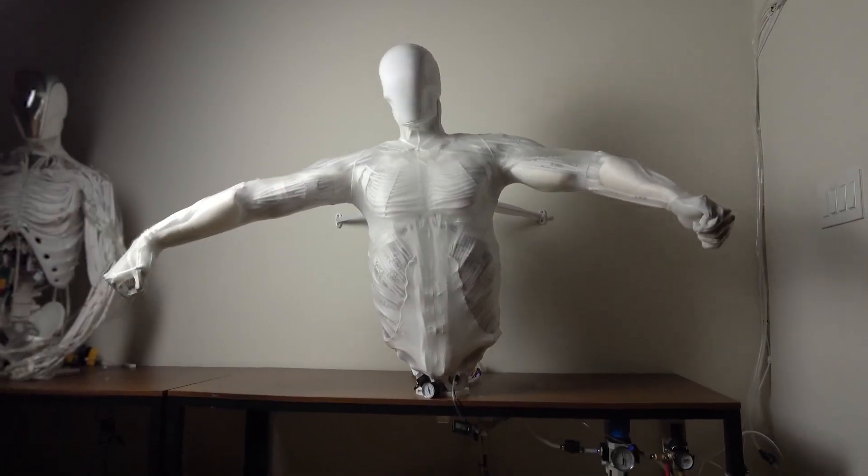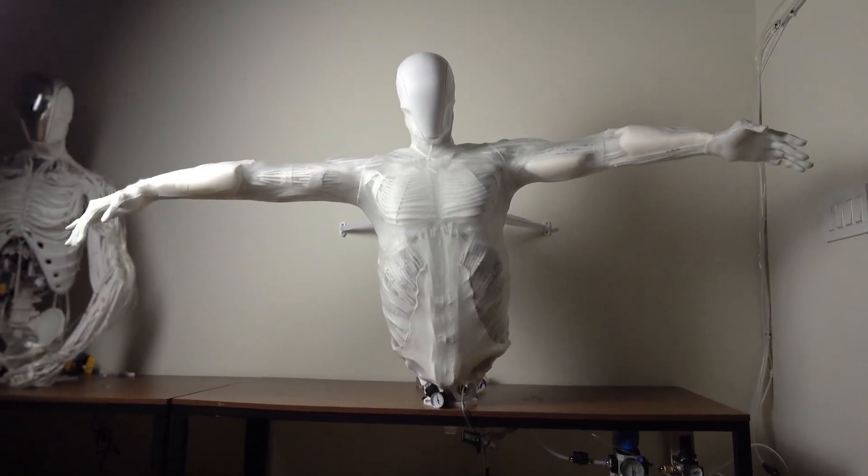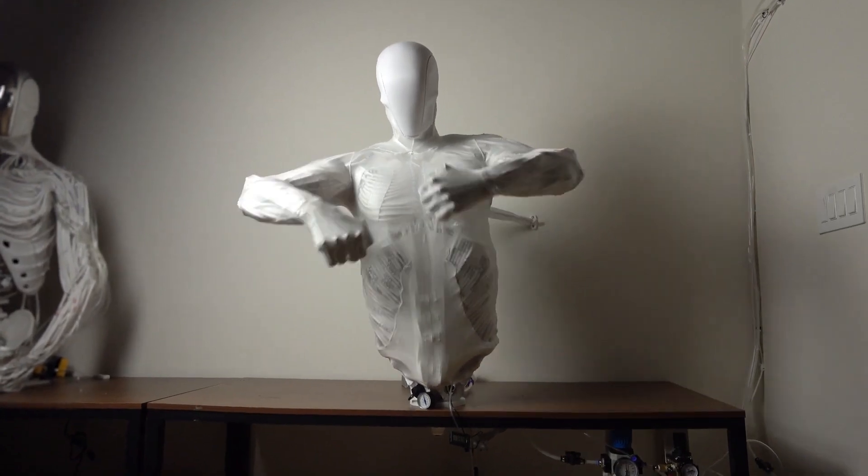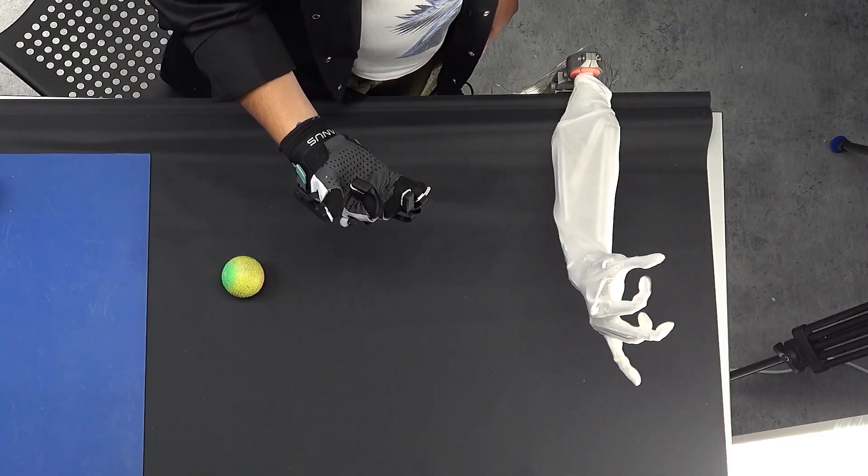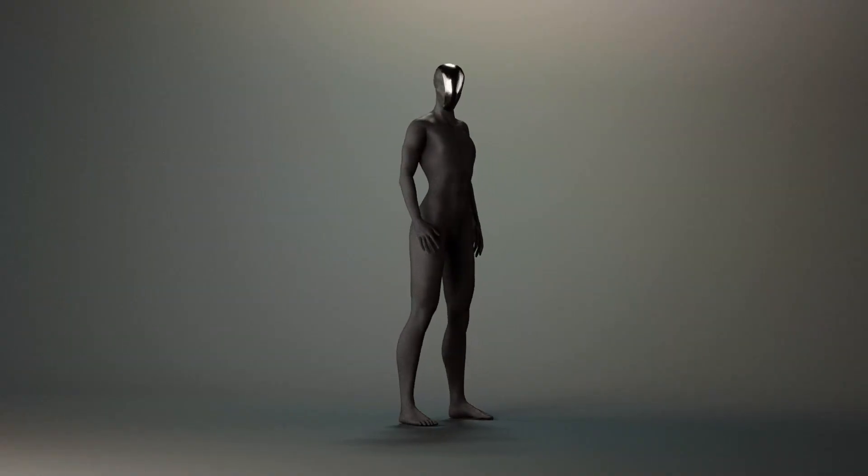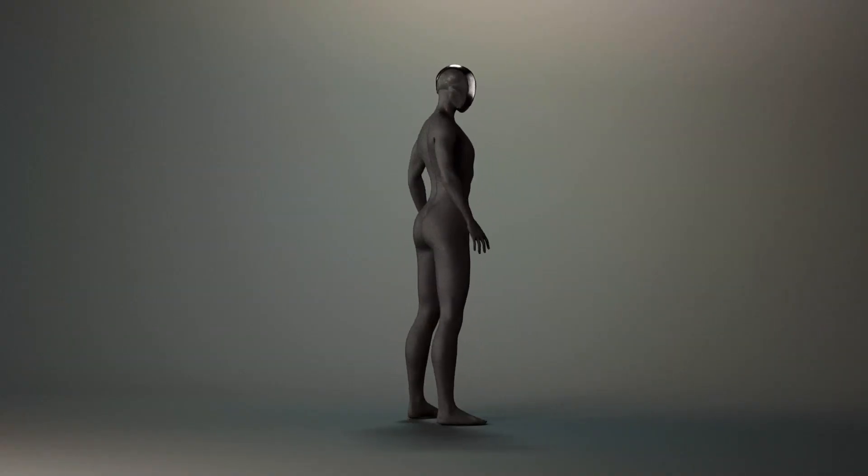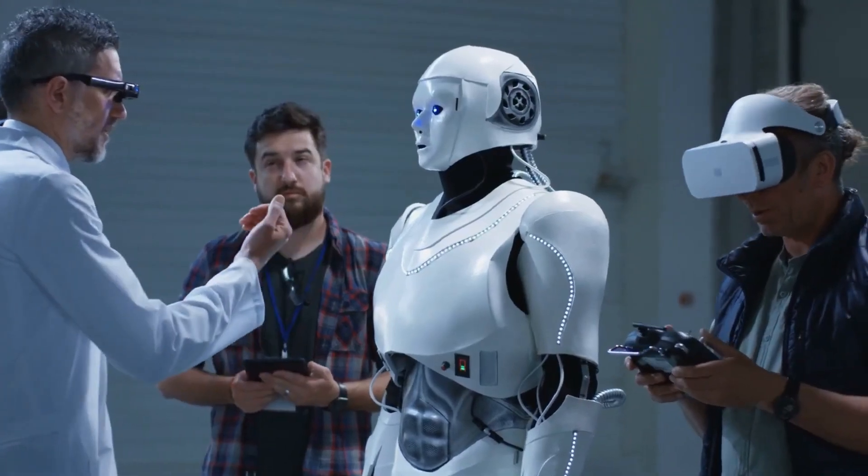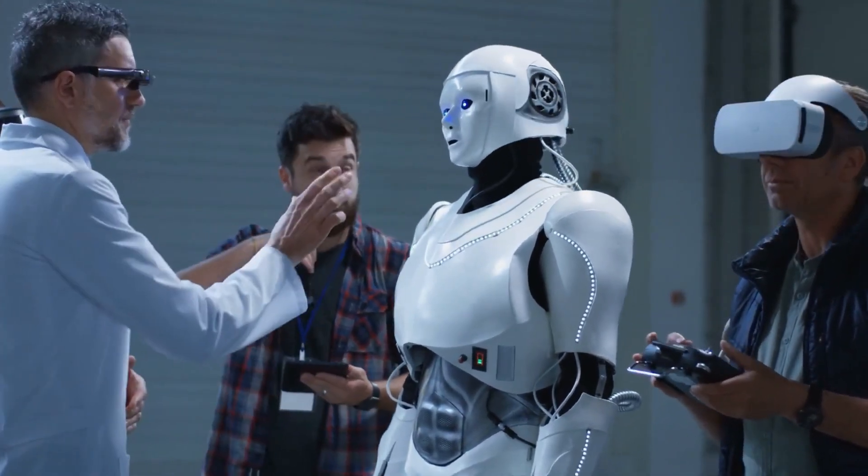Despite the impressive technology, Clone Alpha hasn't yet been demonstrated as a fully integrated system. While the company has showcased individual components like the robotic hand and torso, it hasn't released footage of the complete humanoid robot in action. This has led to some skepticism about whether the technology can deliver on its promises.